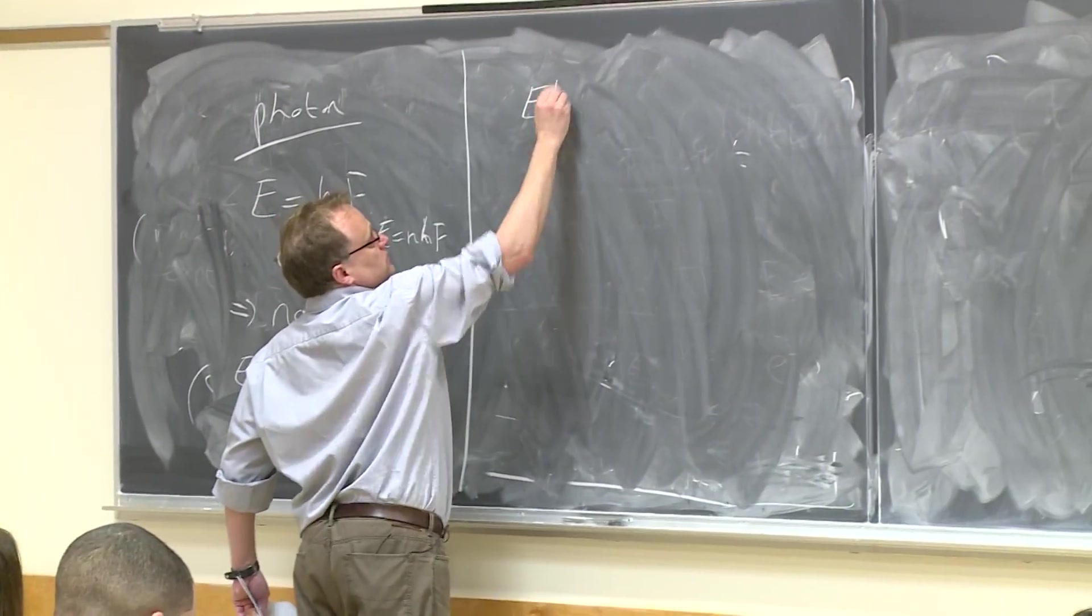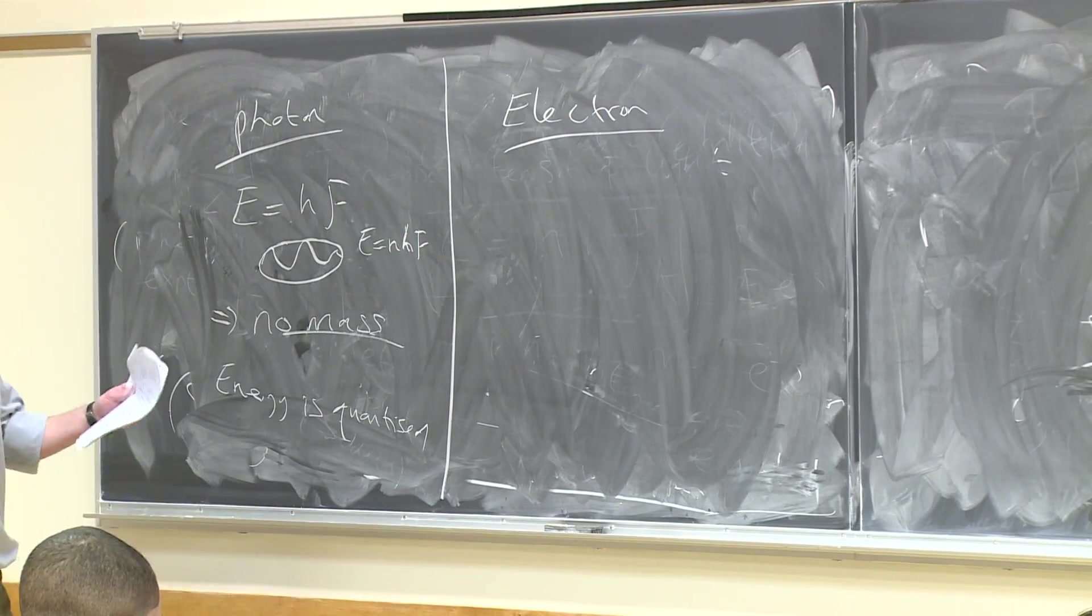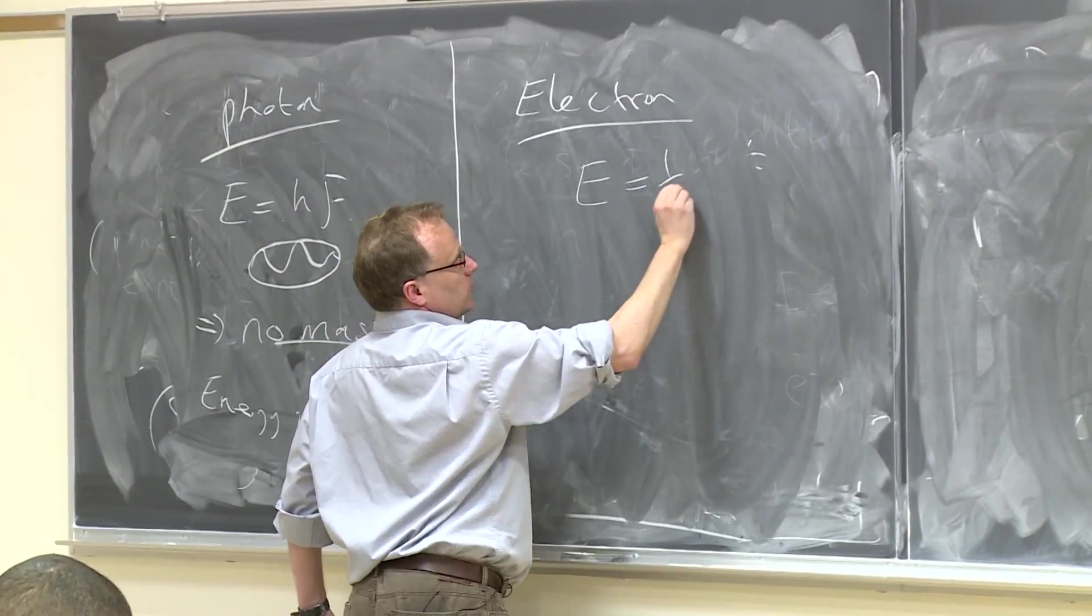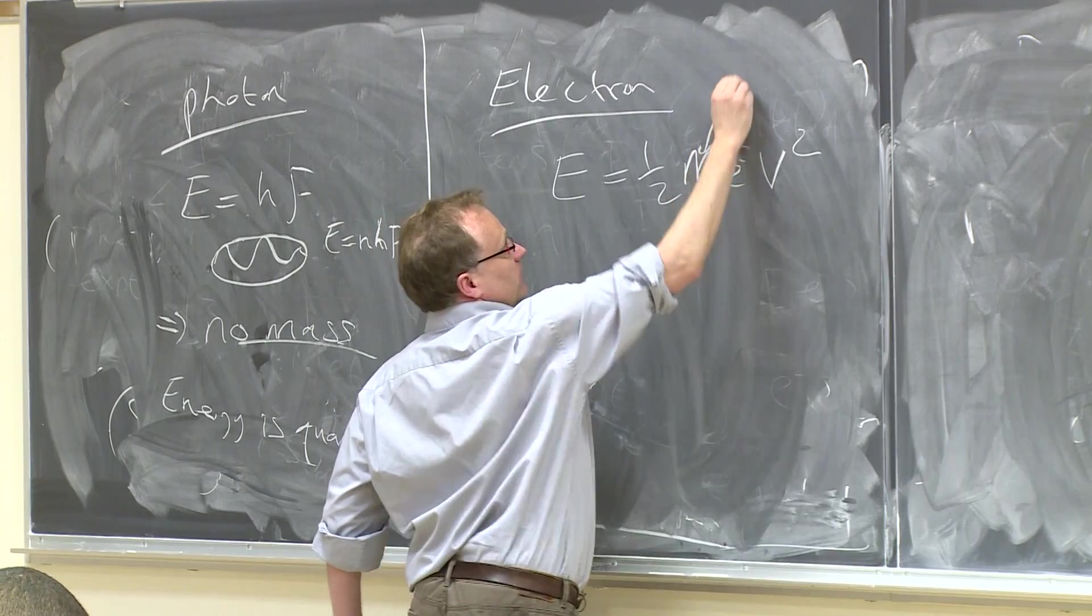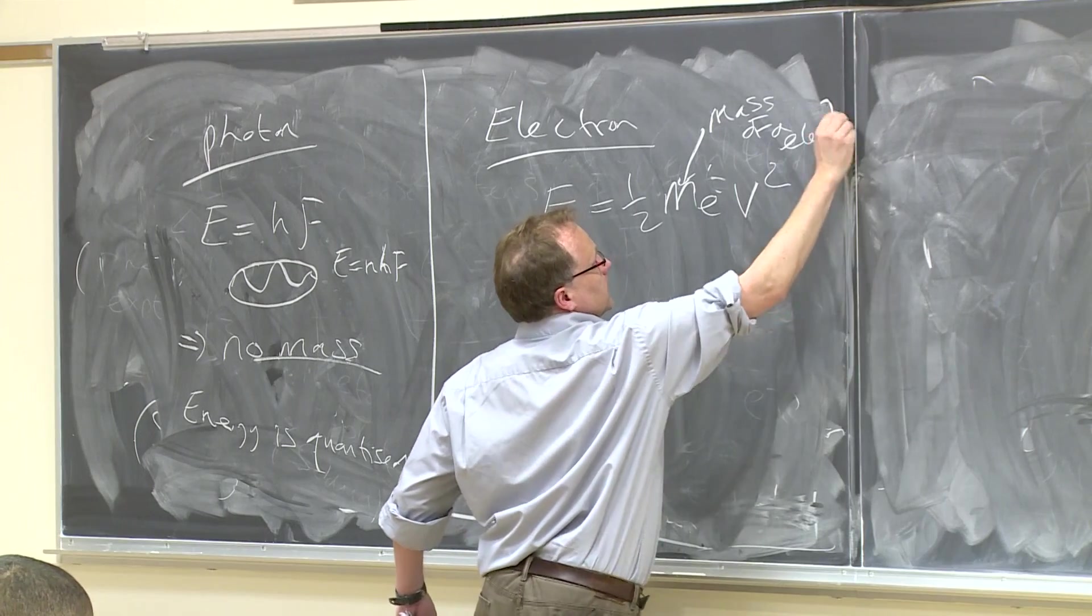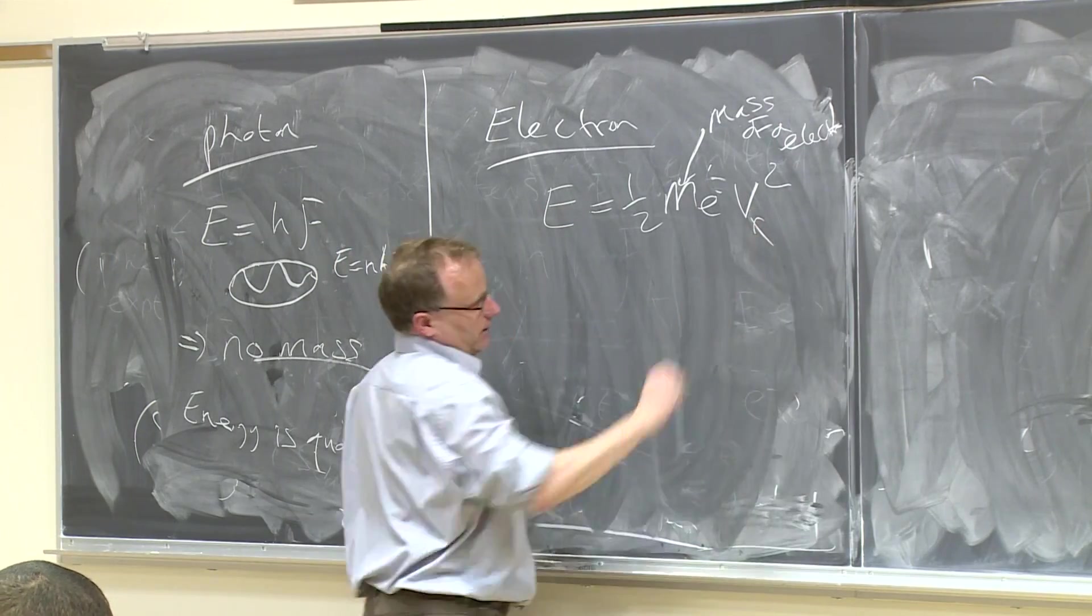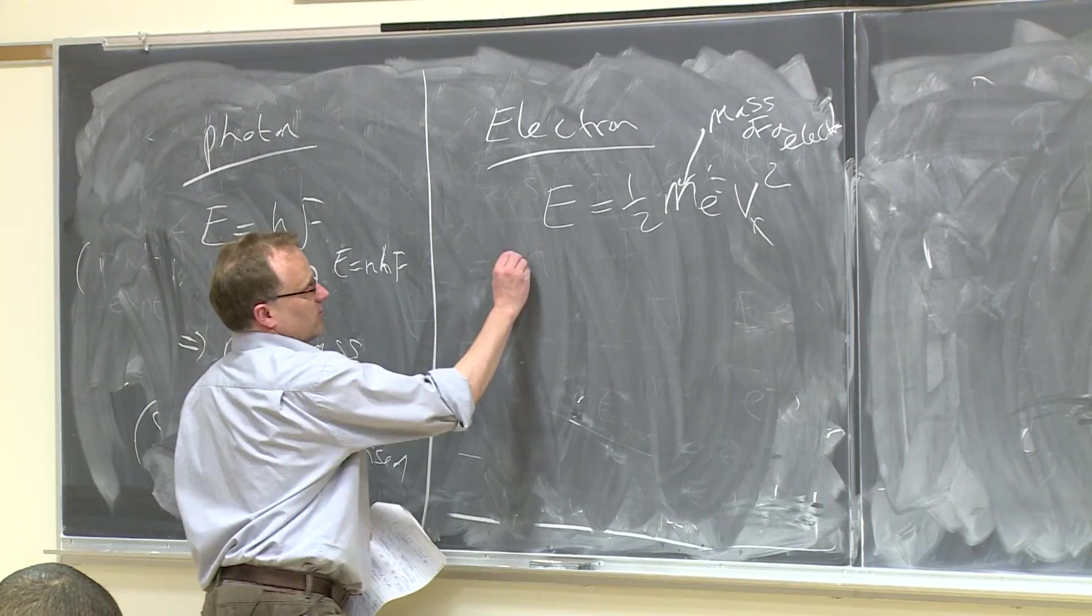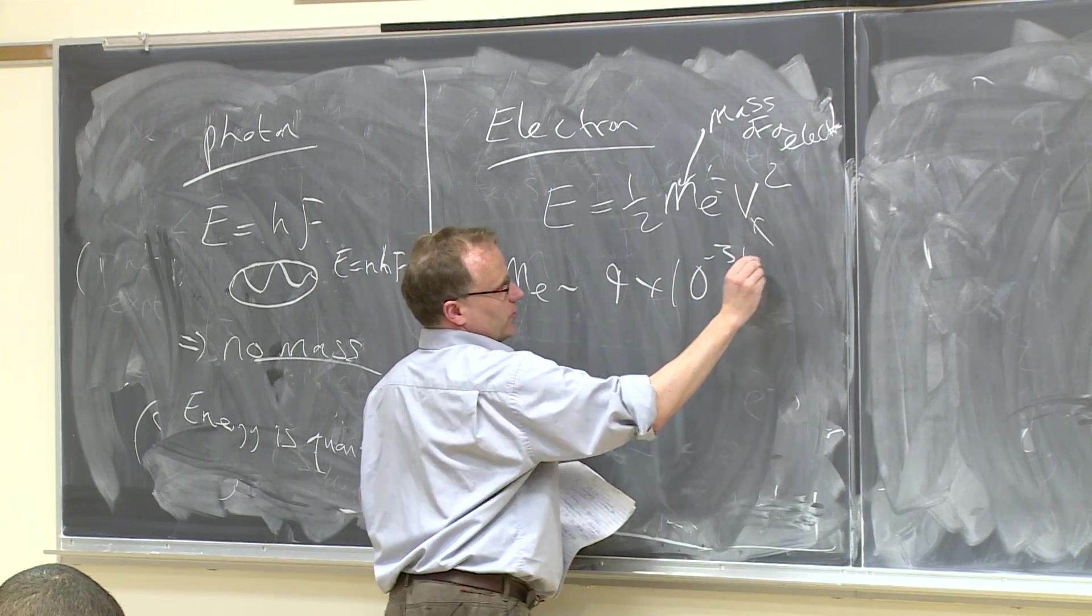Now, an electron - you could think of an electron as having mass. You could have an energy equal to a half mEV squared, where that is the mass of an electron. And V would be the velocity of an electron. It has a very small mass, about 9 times 10 to the minus 31 kilograms.